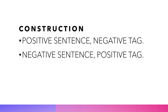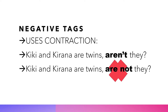The construction of question tags: a positive sentence has negative tags, and a negative sentence has a positive tag. In negative tags, we use contractions. For example, 'Kiki and Kirana are twins, aren't they?' But we cannot say 'Kiki and Kirana are twins, are not they.' 'Are not' is not allowed in a question tag.